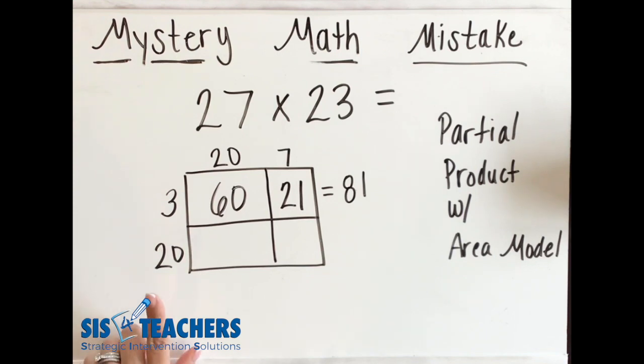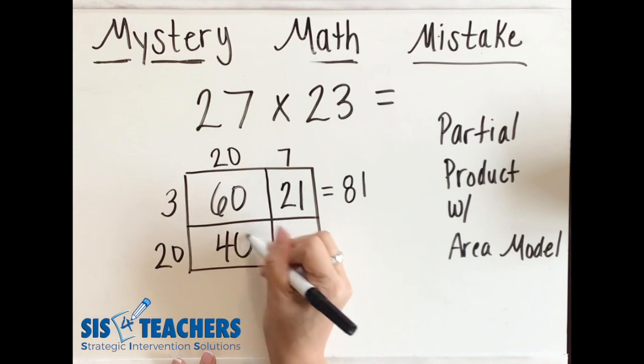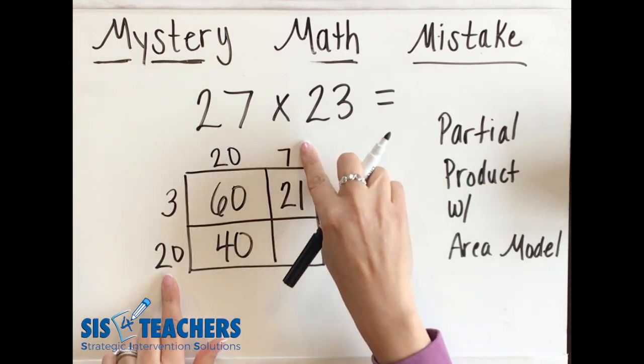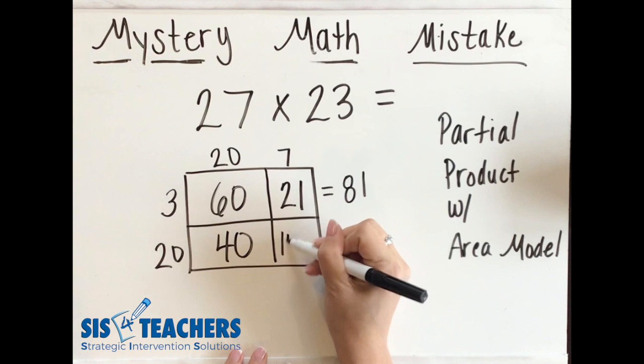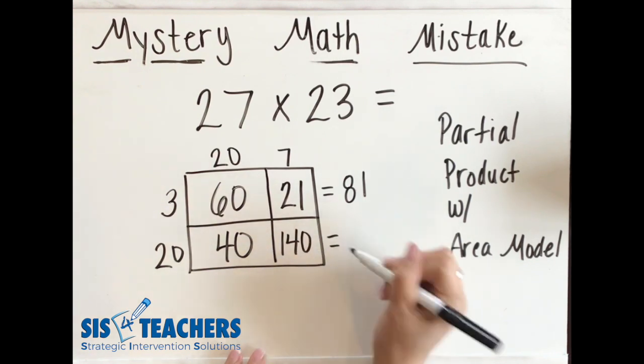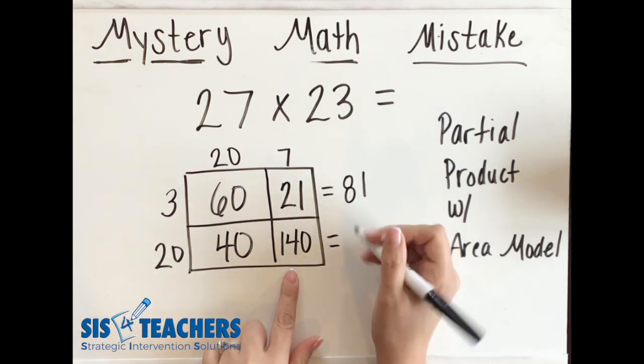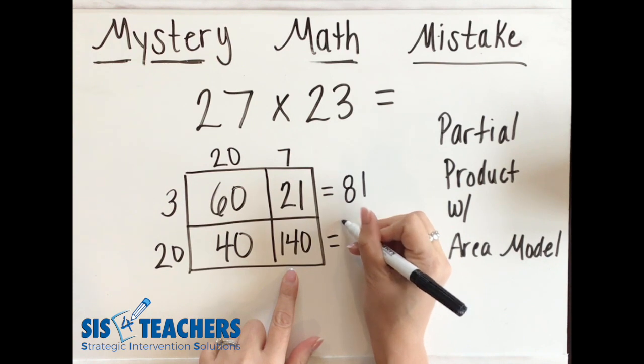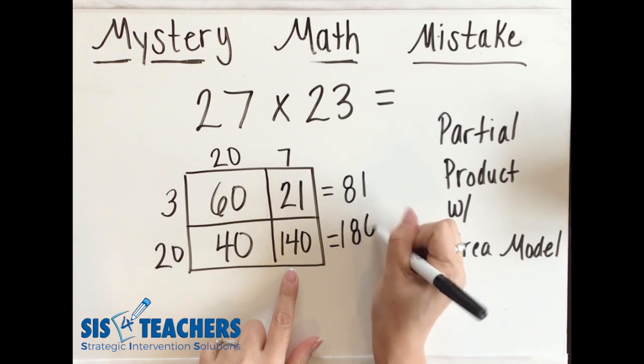Next I'm going to go across and do 20 times 20 which I know equals 40 and then I'm going to do 20 times 7 which I know equals 140. When I add this together my 40 plus my 140 I know that I end up with 180.